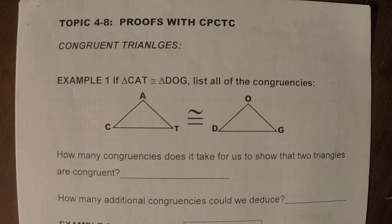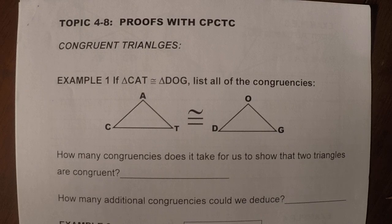Now that you've completed topic 4-7, two-column proofs, we're going to move into proofs, but we're going to add a step to it, and that step is called CPCTC, which actually stands for congruent parts of congruent triangles are congruent.